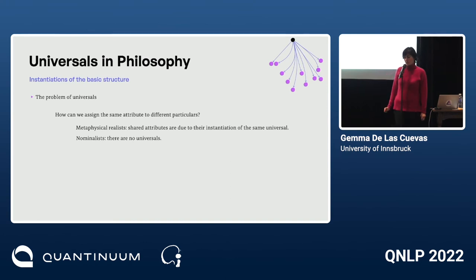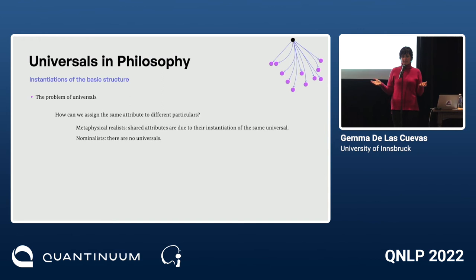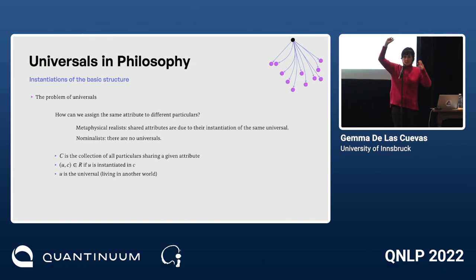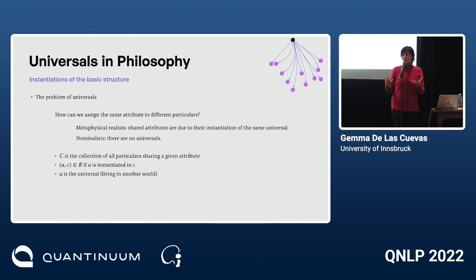The problem of universals in philosophy — roughly, how we can assign the same attribute to different particulars — is a very old problem in metaphysics. Metaphysical realists say different particulars share an attribute because they both instantiate the same universal. For these realists, a universal is something mysterious that lives outside of time and space, immutable; and its relation with all objects sharing that attribute is one of universality in our sense.